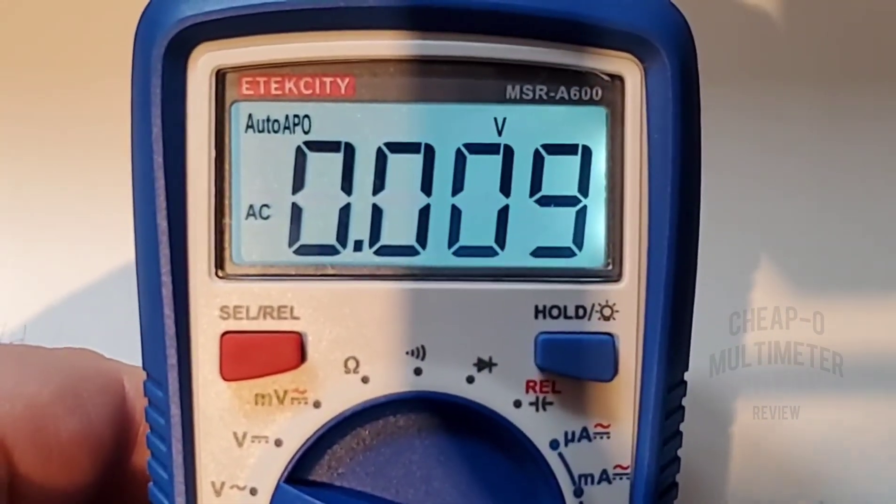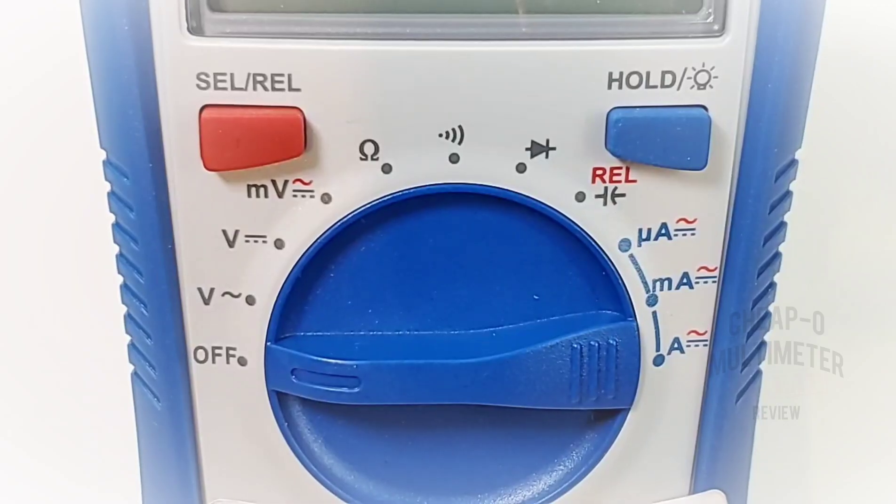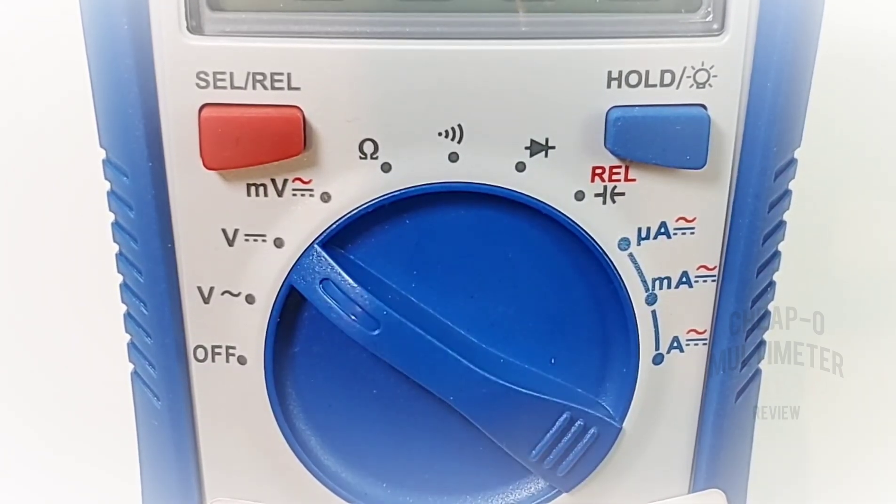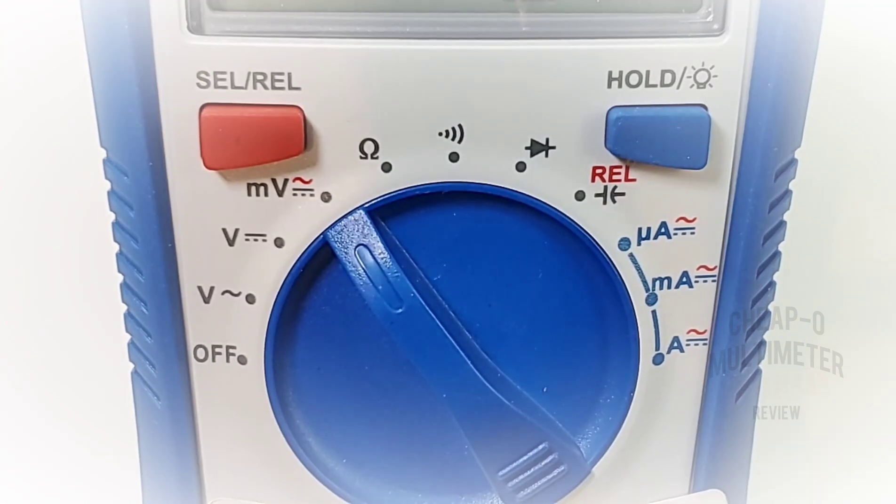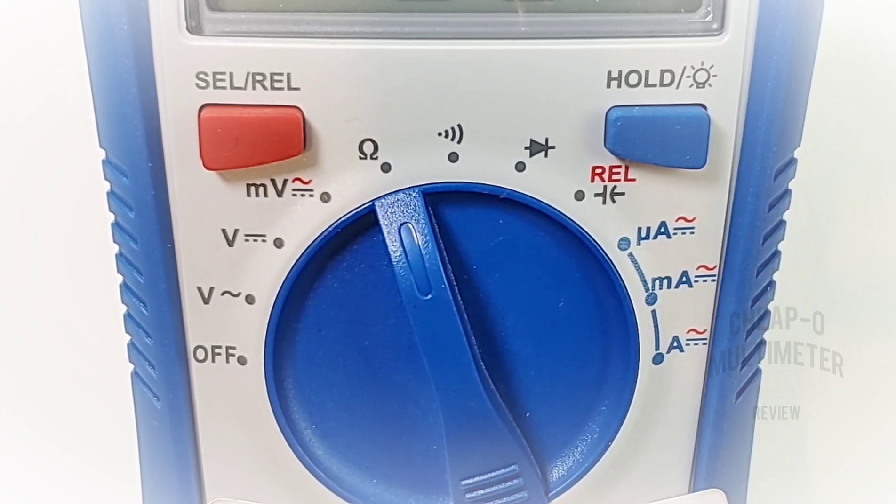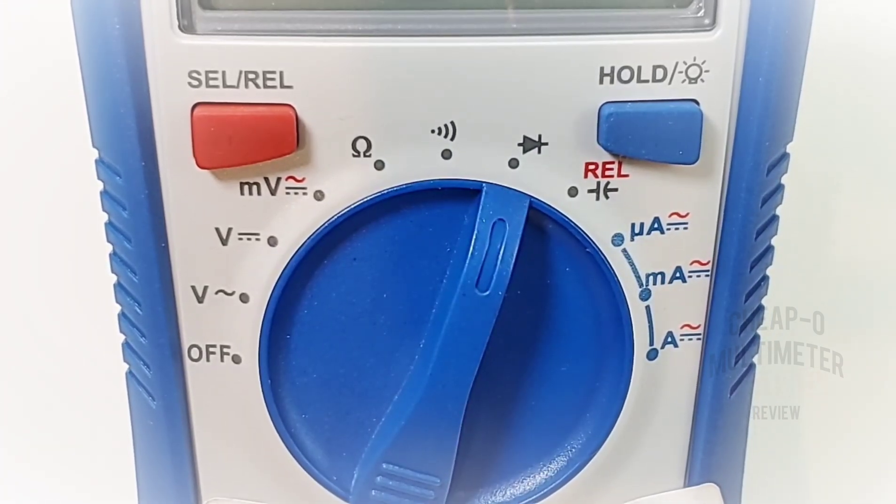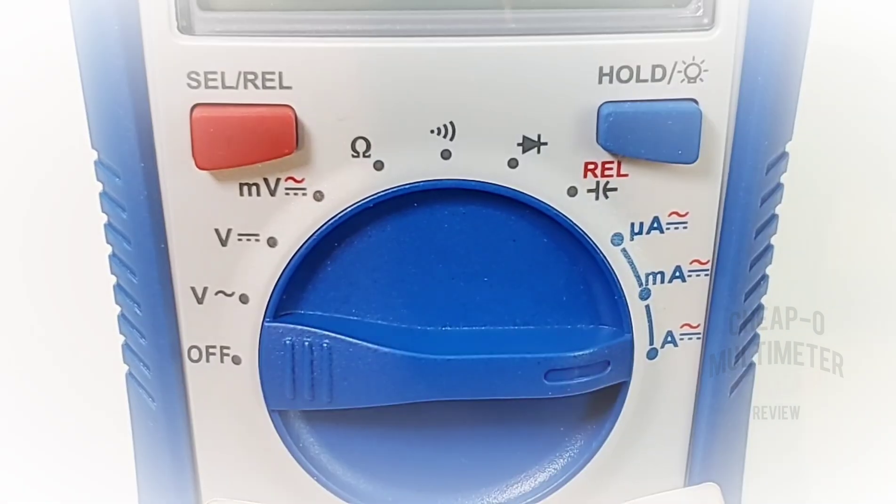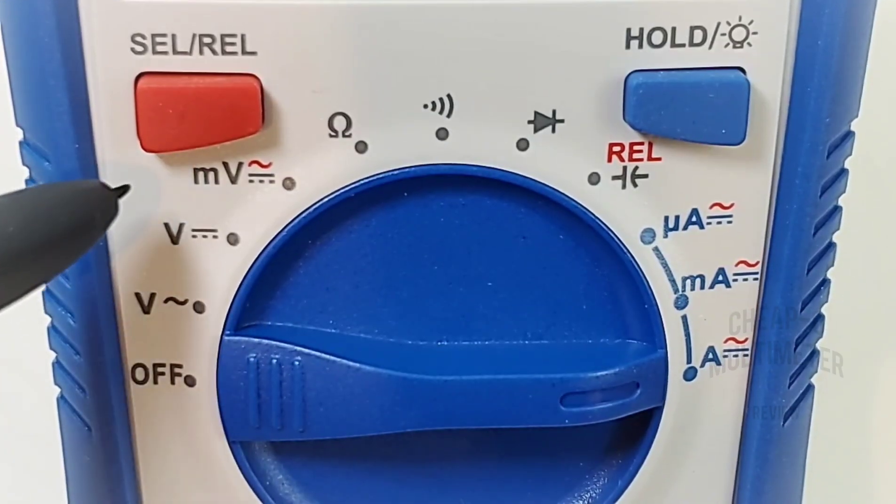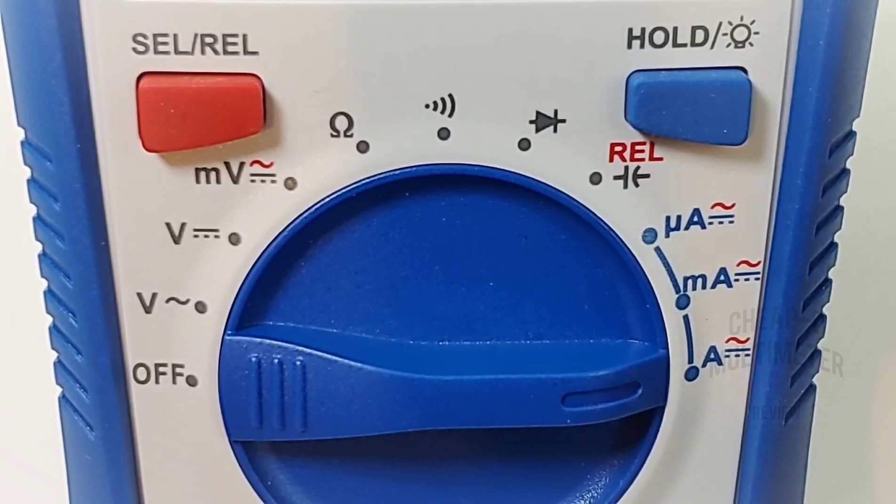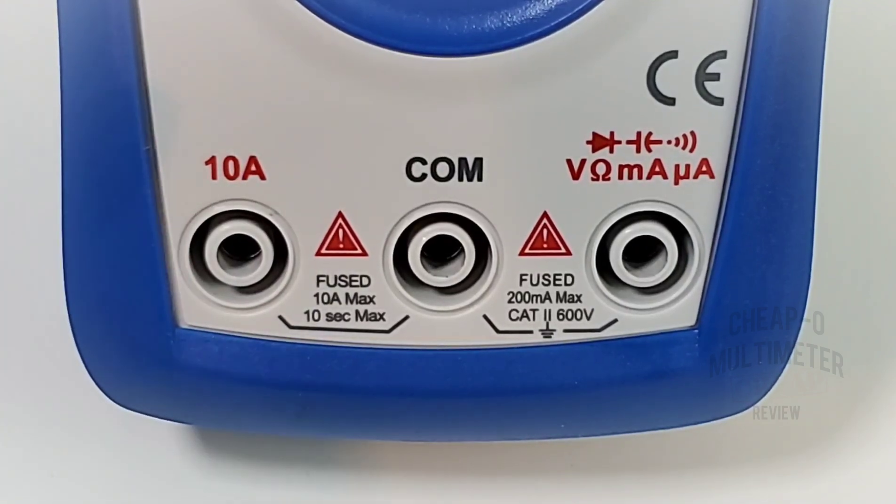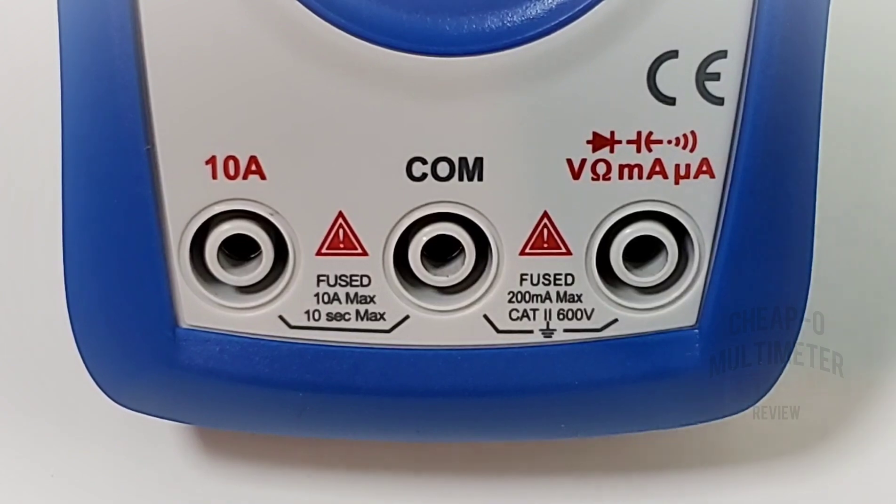Looking at the rotary selector switch starting at the nine o'clock or off position: volts AC up to 600 volts, volts DC up to 600 volts, millivolts AC/DC, resistance up to 200 megaohm, continuity, diode, capacitance with rel, microamps AC/DC, milliamps up to 200 milliamps, finally high current amps up to 10 amps AC/DC. On the left we have our select/rel button, on the right our hold and backlight. At the bottom of the meter we have our high current input on the left up to 10 amps, in the middle we have our common ground, and on the far right we have our diode, capacitance, continuity, voltage, resistance, milliamps and microamps.